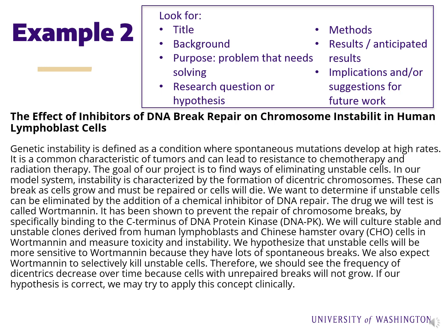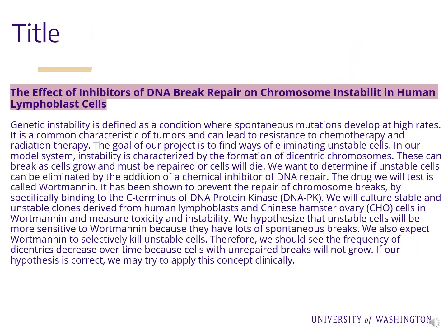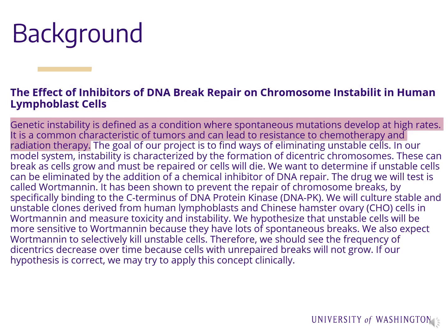Now we'll do a second example. Take a moment, pause, and read the abstract. See if you can identify the following abstract components, any strengths, and any areas of improvement. When you're ready to move on, unpause your video. Here we've identified the title as the first component of the abstract. The title should be in title case, where every significant word in the title is capitalized. This title concisely describes the research topic, but notice the typo in the word 'instability.' Next, the background information is found at the beginning of the paragraph, including information on genetic instability and how it may relate to tumors, chemotherapy, and radiation therapy.